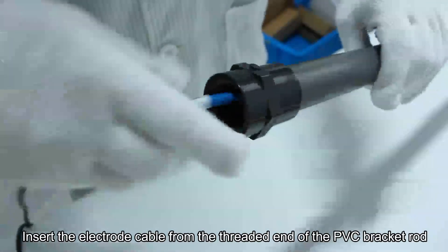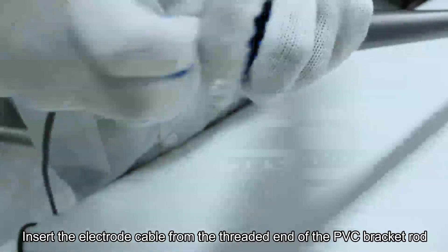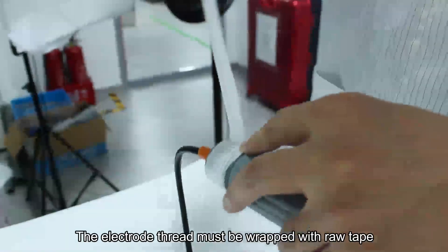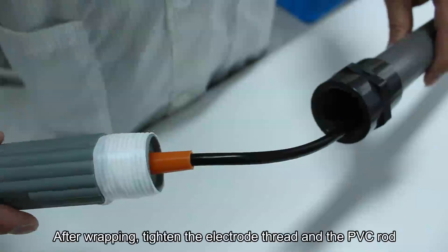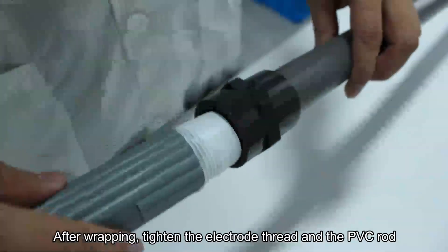Insert the electrode cable from the threaded end of the PVC bracket rod. The electrode thread must be wrapped with raw tape to prevent water from seeping in. After wrapping, tighten the electrode thread and the PVC rod.